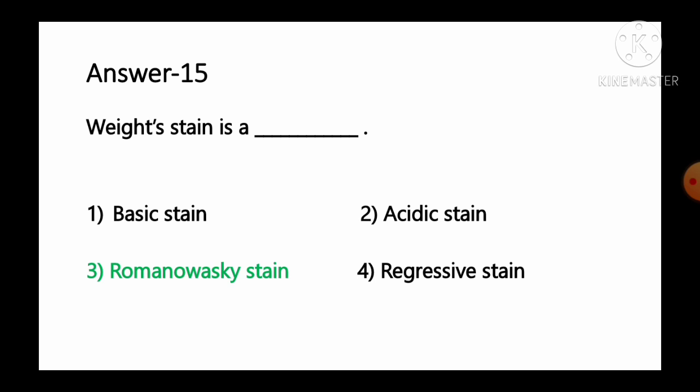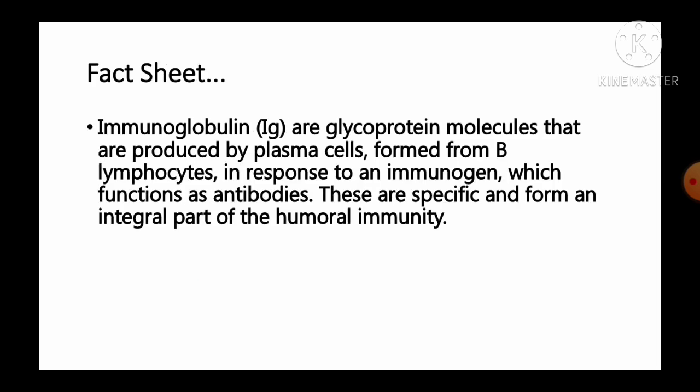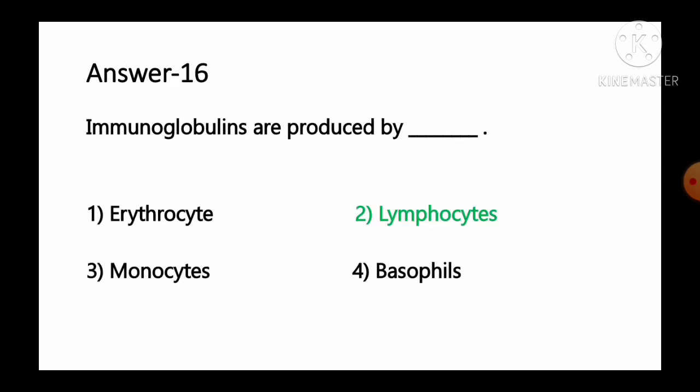Question number 16: Immunoglobulins are produced by — option 1 erythrocytes, option 2 lymphocytes, option 3 monocytes, option 4 basophils. Immunoglobulins are glycoprotein molecules produced by plasma cells formed from B lymphocytes in response to an immunogen or antigen, which function as antibodies. They are an integral part of humoral immunity. So option number 2, lymphocytes, is the correct answer.